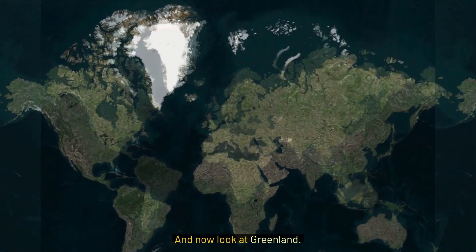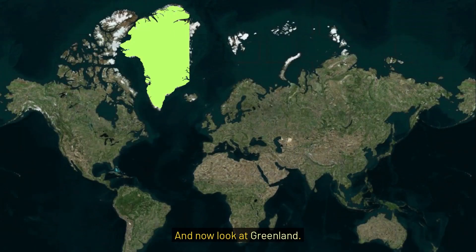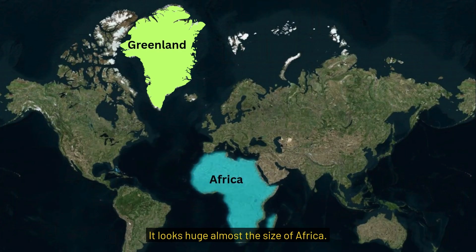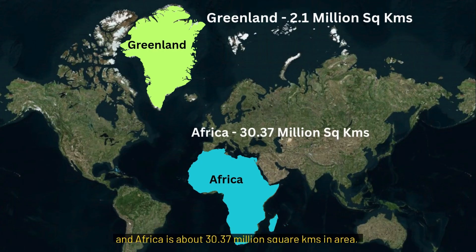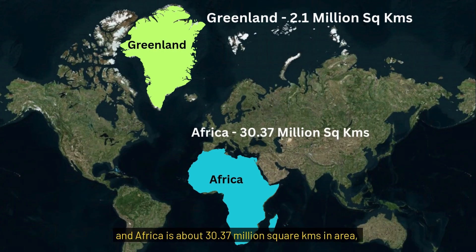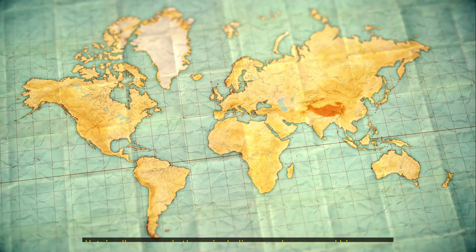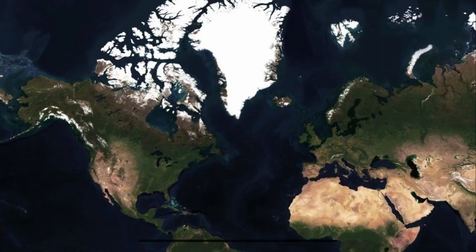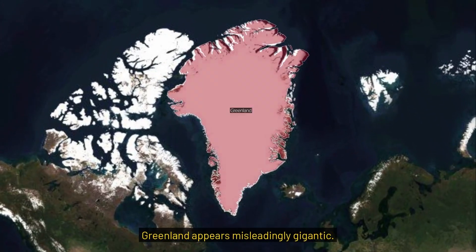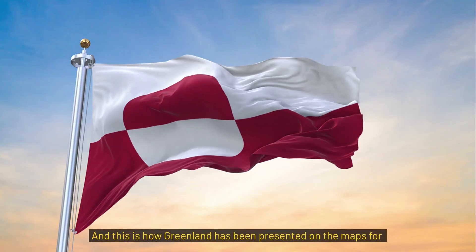Look at this world map and now look at Greenland. It looks huge, almost the size of Africa. But here's the thing: Greenland is only about 2.1 million square kilometers in area, and Africa is about 30.37 million square kilometers in area — that is about 14 times the size of Greenland.